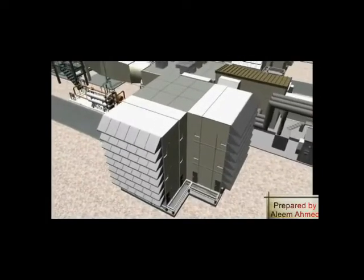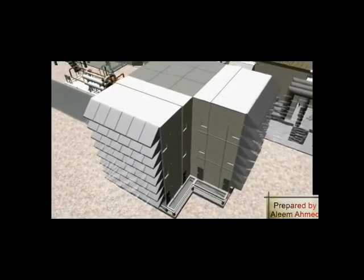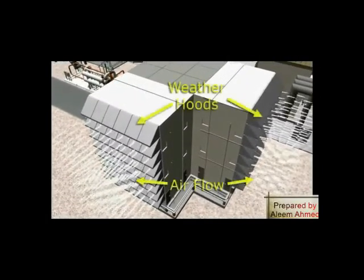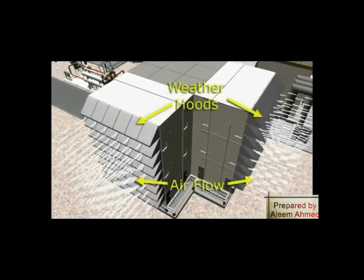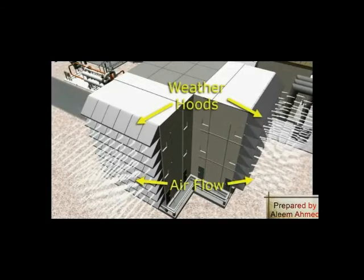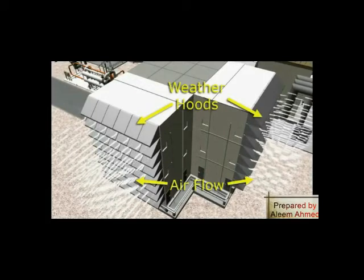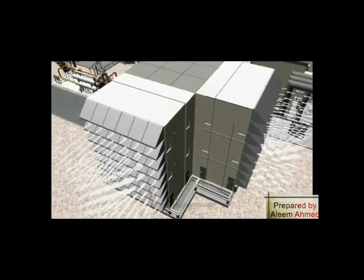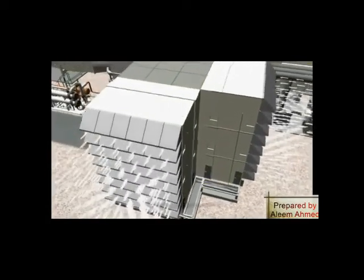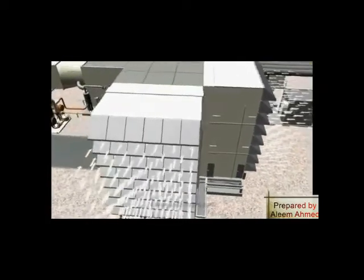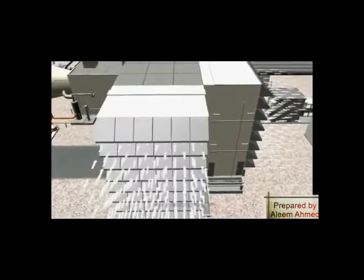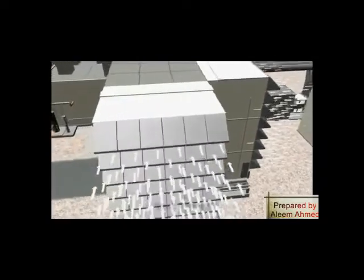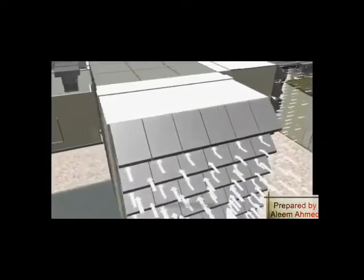The incoming air to the combustion turbine first goes through a weather hood to a filter housing. The weather hoods protect the filters from the effects of rain and sun and help minimize the amount of debris drawn into the filters.